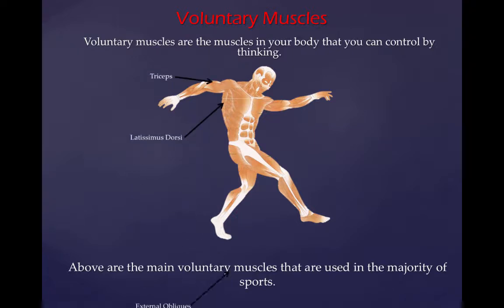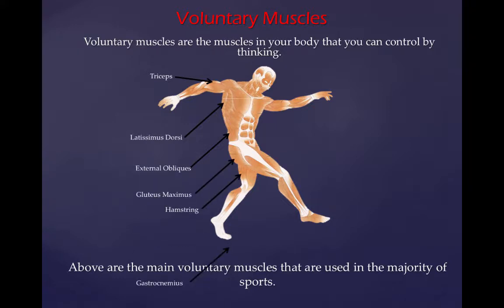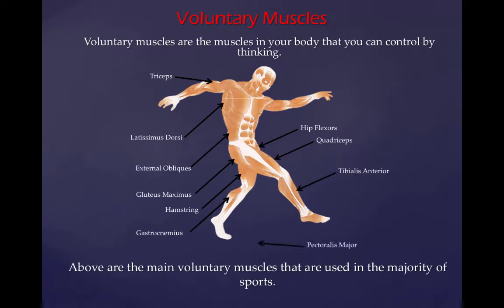The major voluntary muscles used in sport include: tricep, latissimus dorsi, external obliques, gluteus maximus, hamstring, gastrocnemius, tibialis anterior, quadriceps, hip flexors, pectoralis major, bicep, and deltoid.